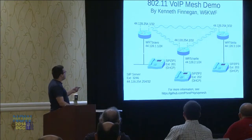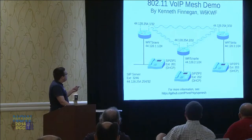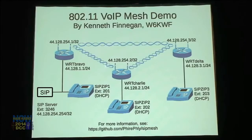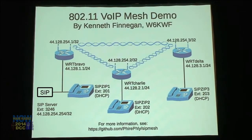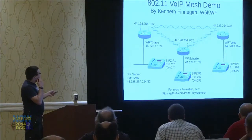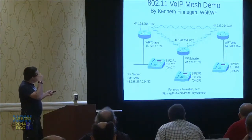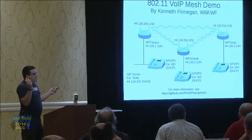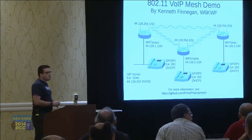Unlike the HSMM guys — I think they're using network address translation — I'm actually using addresses in the amateur radio slash 8 block, which I haven't seen much of today, which is kind of disappointing. I was crushed when I saw David using 192.168 addresses, because we have this whole slash 16 44.128 block that's used for these sort of experimental setups.